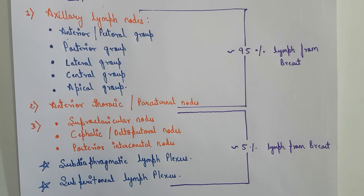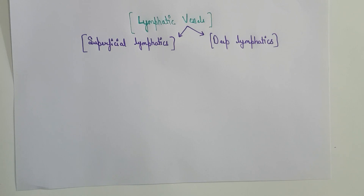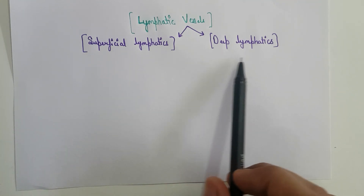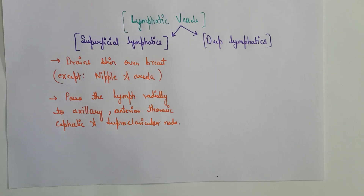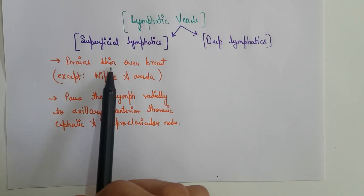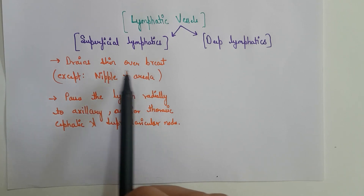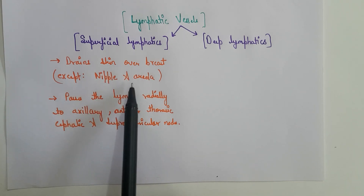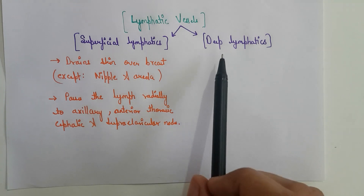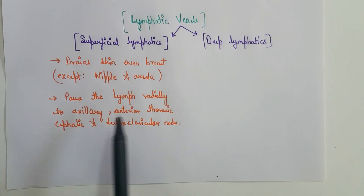Now let us see the lymphatic vessels which connect these lymph nodes. The lymphatic vessels are of two types: the superficial lymphatics and the deep lymphatics. The superficial lymphatics drain the skin over the breast with the exception of the nipple and the areola. The nipple and the areola are drained by the deep lymphatics of the breast.